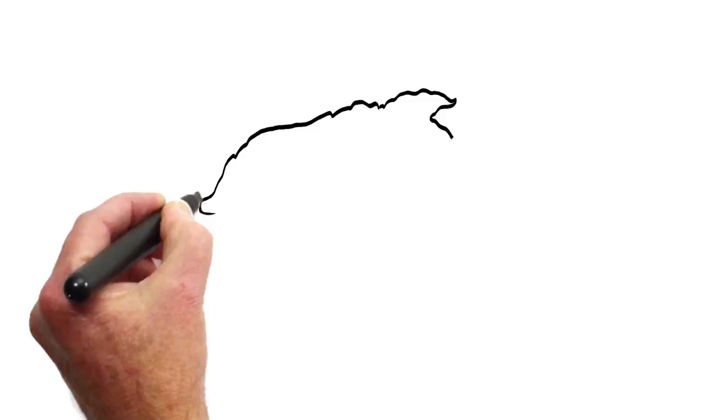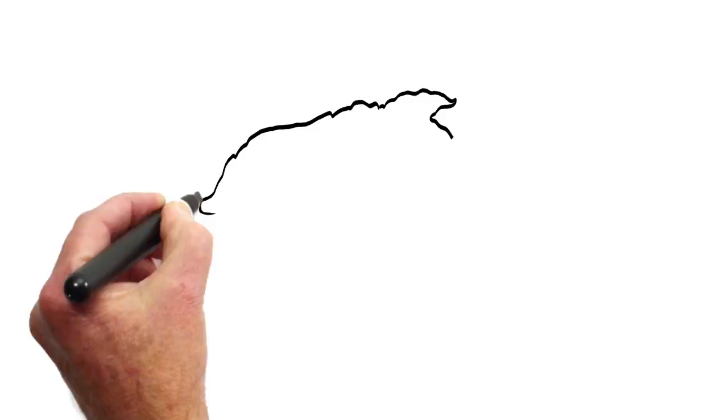Today, Dexion is the largest racking producer in the Asia-Pacific, filling one billion pallet positions across the globe.